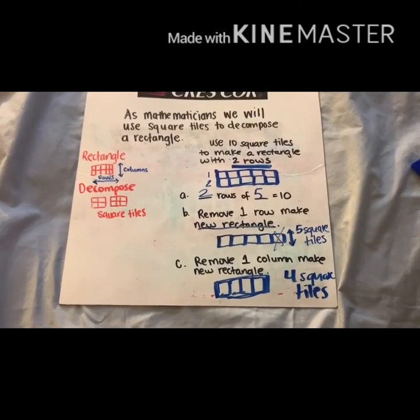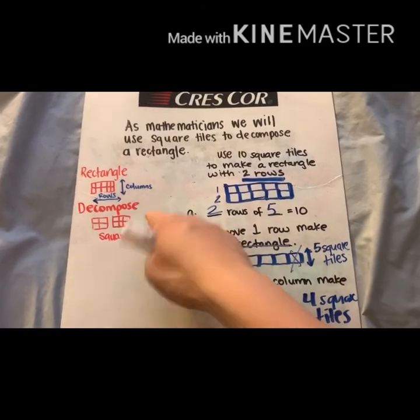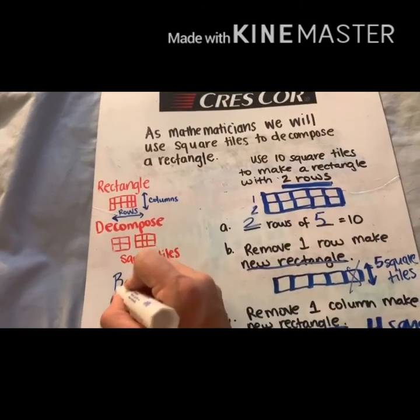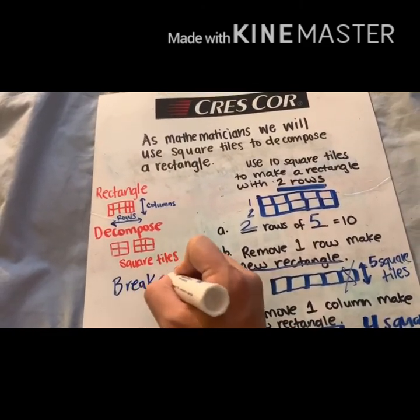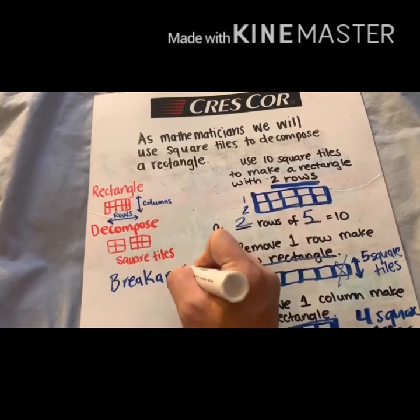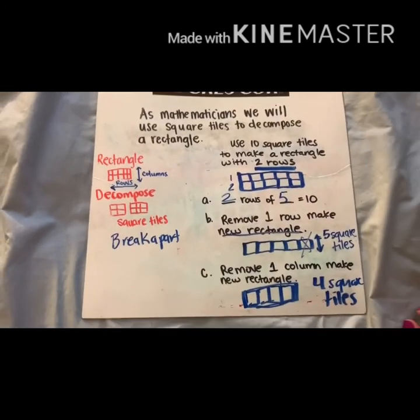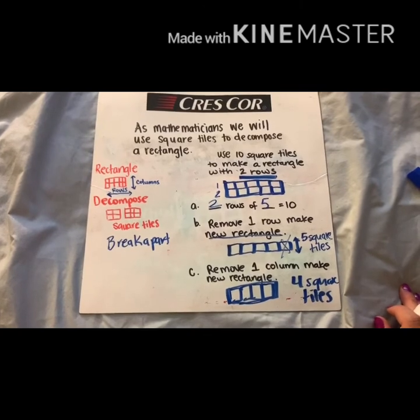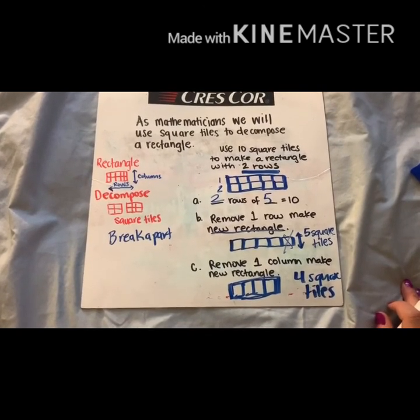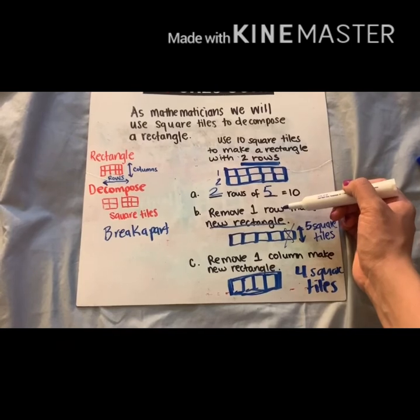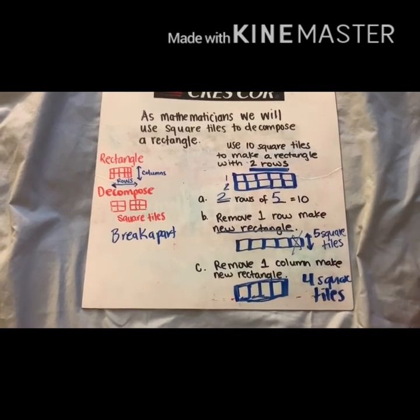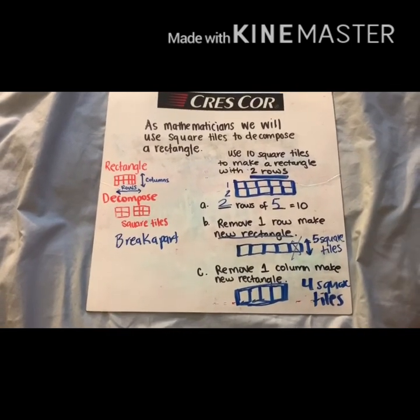All right. So remember today we're decomposing again. We're breaking apart. Break apart. Our rectangles, which have rows and columns, by taking away a row and a column. All right, go ahead and give it a shot.